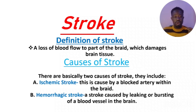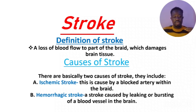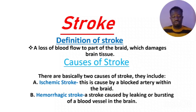Another cause is bleeding within the brain. The blood vessels, capillaries, or arteries that take blood to the brain tissue can rupture. When they rupture, there is a leakage of blood within the brain, and the brain tissue will not receive adequate blood supply or oxygen. This leads to death of tissues in the brain and will therefore cause stroke.